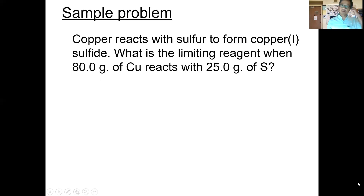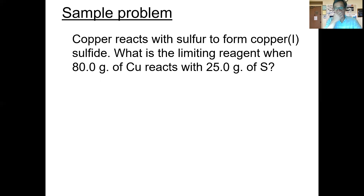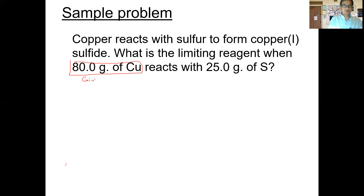When we do these problems, it will be a stoichiometric calculation. We're comparing the reactants with each other to figure out which one runs out first. You choose one of the reactants — it doesn't really matter which — and do the stoichiometry. Then you compare your answer to the given amount. Make sure you identify the given amount of copper and the given amount of sulfur in the problem before doing any calculation.